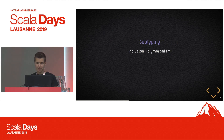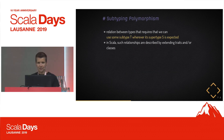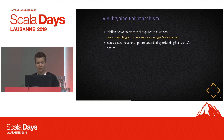The third kind of polymorphism we're going to look at is subtyping, also sometimes called inclusion polymorphism. It's most often the kind of polymorphism that people coming from an object-oriented background are most familiar with. It basically says we can use a subtype wherever we expect a supertype, and in Scala such relationships are expressed by extending traits or classes.